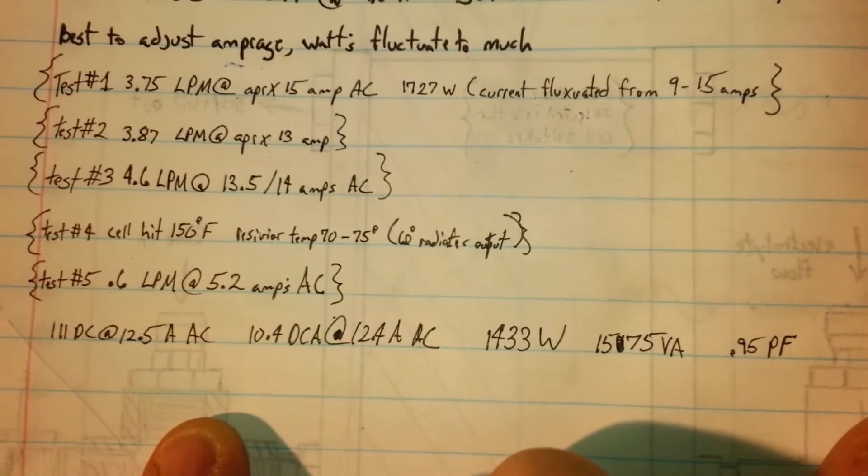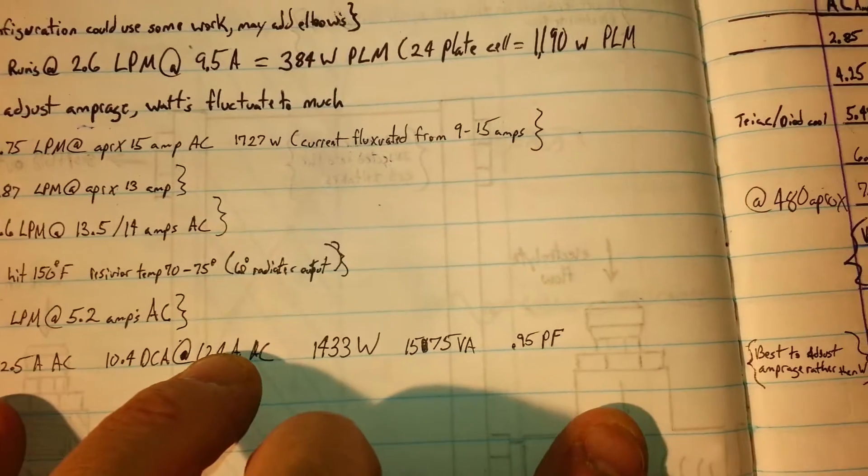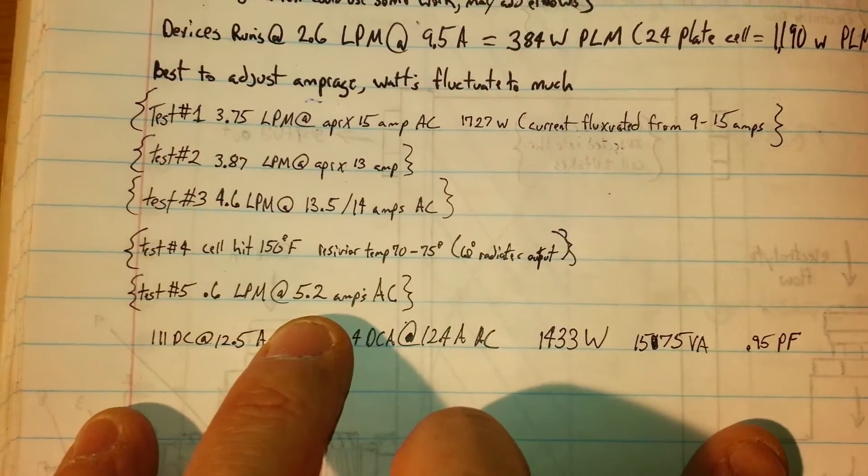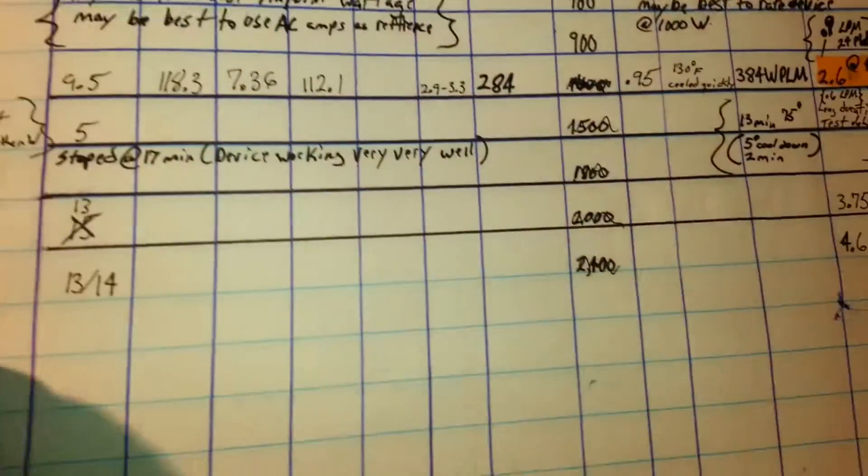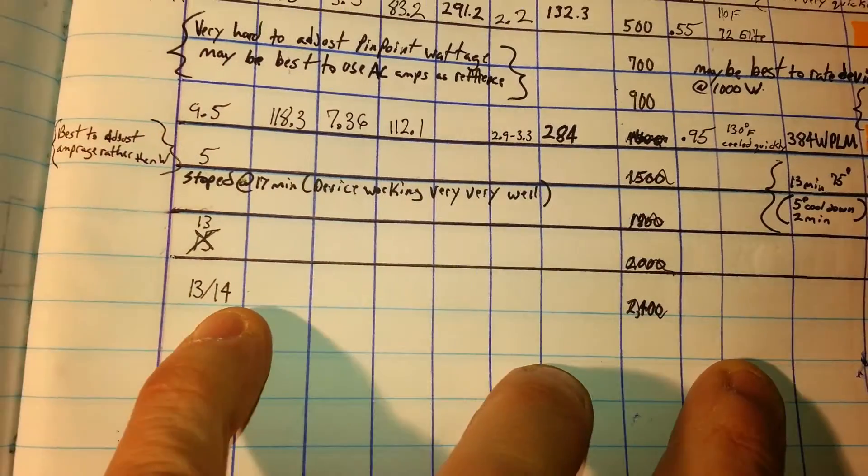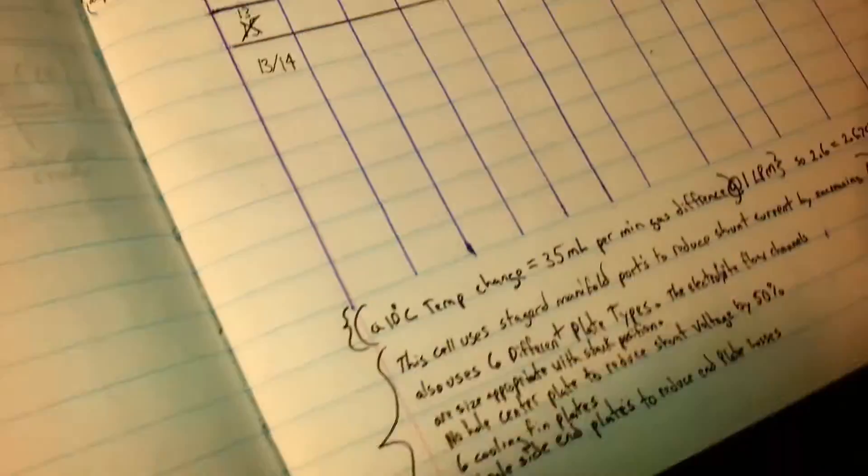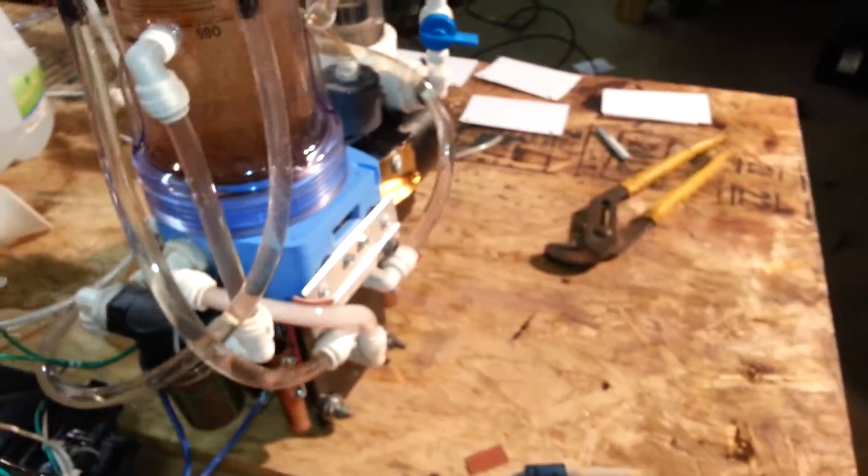So these are some other readings that I did. You can see there, where did that go, most I got out of this so far was 4.6 liters per minute, there it is, and that was at 13 to 14 amps AC input.